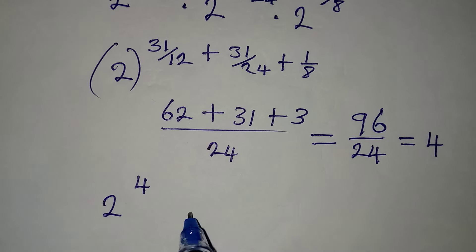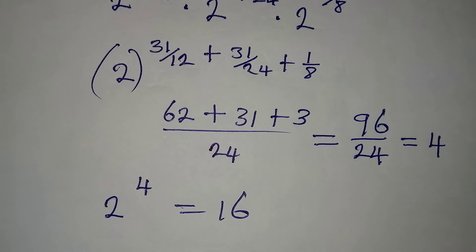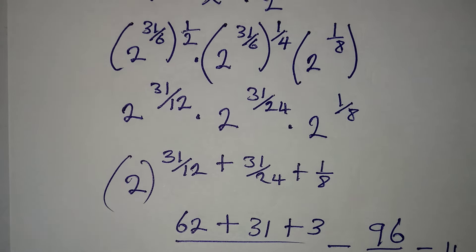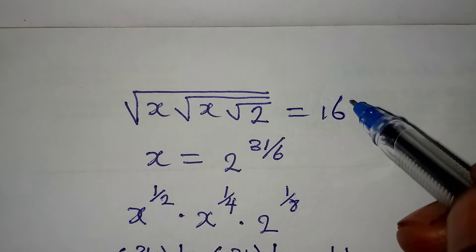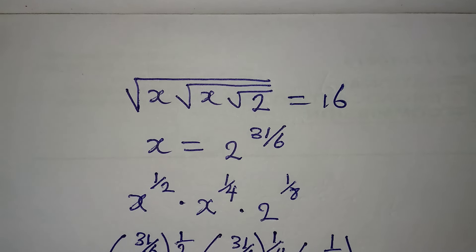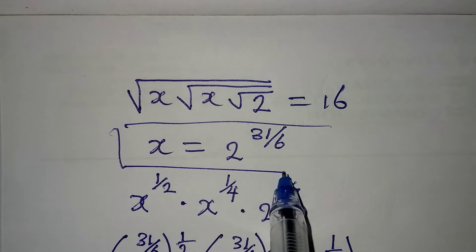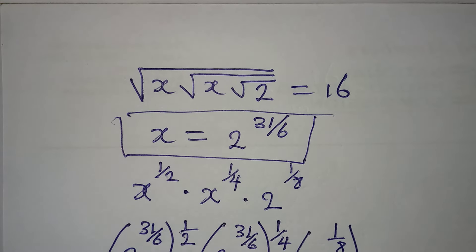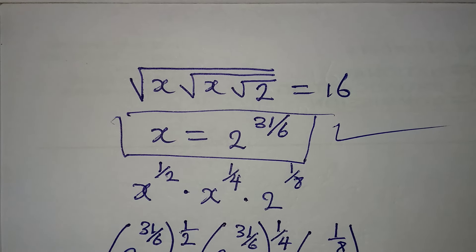And 2 to the power of 4 is 16, which is exactly what we had on the right-hand side of the equation. So our value for x, which is 2 to the power of 31 over 6, is verified and correct. Thank you for watching.